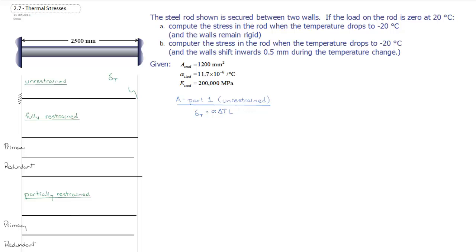In this case, we can go ahead and fill in those components. So we have alpha, which is 11.7 times 10 to the negative 6, that's per degree Celsius, multiplied by our change in temperature. So from plus 20 to minus 20 is a negative 40 degrees Celsius change.